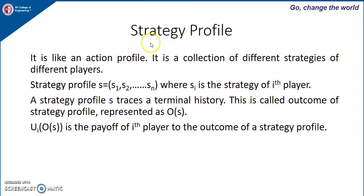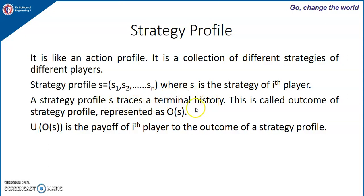Let us see what a strategy profile is. Like an action profile, it is a collection of strategies of different players. The strategy profile s = (s1, s2, ..., sn) where s1 is the strategy of player 1, s2 is the strategy of player 2, and sn is the strategy of player n. A strategy profile s will trace a terminal history, and a strategy profile that traces a terminal history is called the outcome of that strategy profile, represented by O(s).